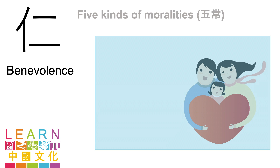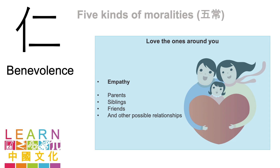The first morality is benevolence. The idea is that we have to love the people around us — that can be our parents, our siblings, our friends, and all other possible relationships. How do we love them? The idea of benevolence suggests that we have to be empathetic, and try to understand one another. By understanding them, we can always forgive and love. Do you agree?